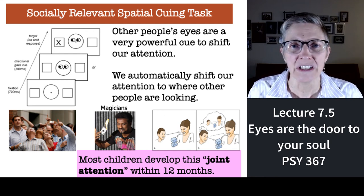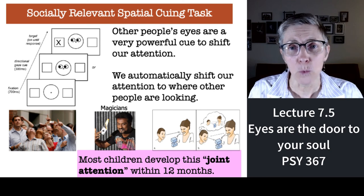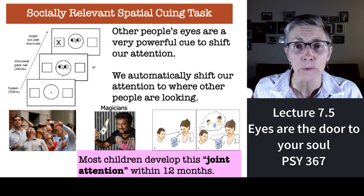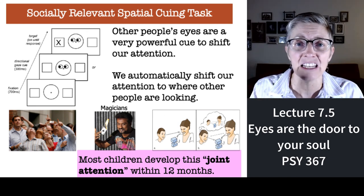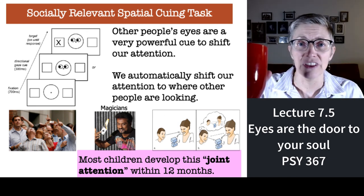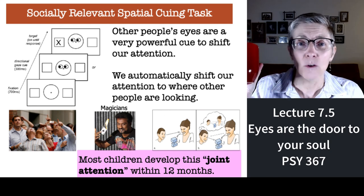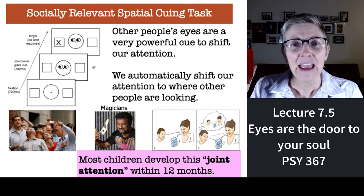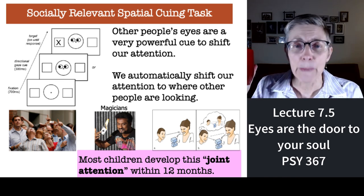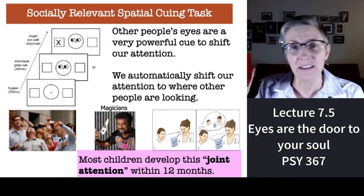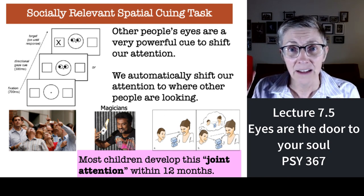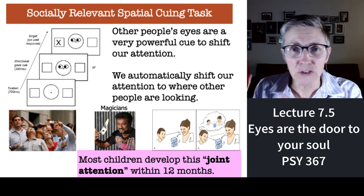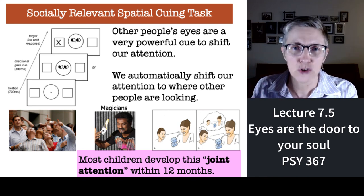With children, we call it joint attention. For example, if I were playing with a little kid and wanted to teach the child that this is called a cup, I might say, 'Look, Johnny, here's a cup.' By the time Johnny gets to be about 12 months, he'll understand that if I'm looking at something and talking about it, and he's looking at something and talking about it, we both understand we're talking about the same thing — that's joint attention.